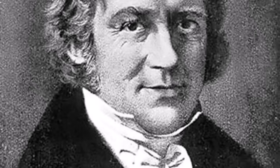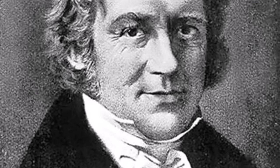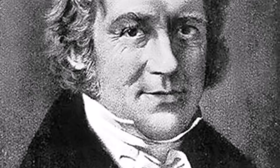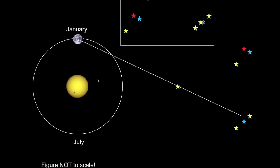Friedrich Bessel, a German astronomer, became the pioneer in this endeavor. In 1838, Bessel successfully measured the parallax of the star 61 Cygni, marking the first time the distance to a star beyond our solar system was determined. The principle of parallax relies on Earth's orbit around the sun. As our planet completes its yearly journey, the position of a nearby star appears to shift against the distant cosmic background. By precisely measuring this apparent movement, astronomers can calculate the distance to the star.